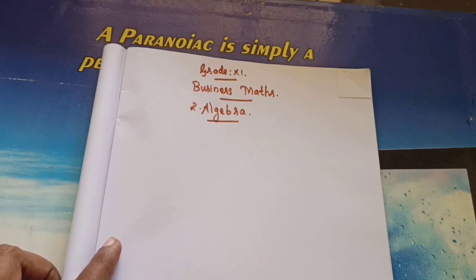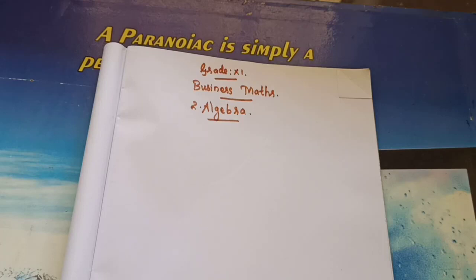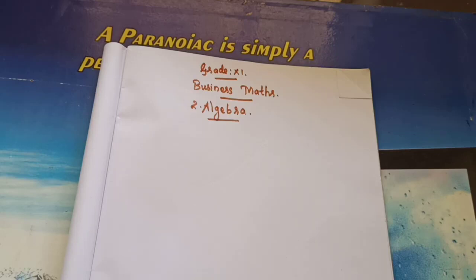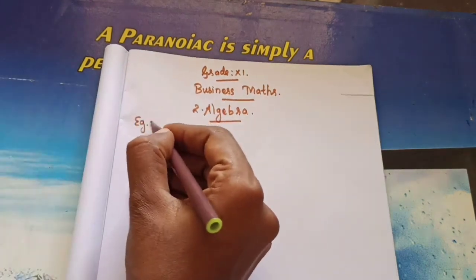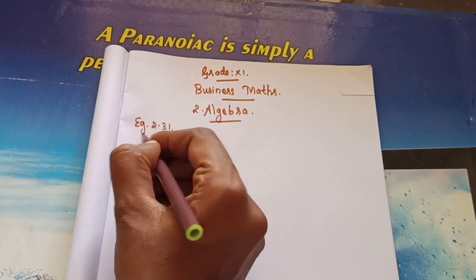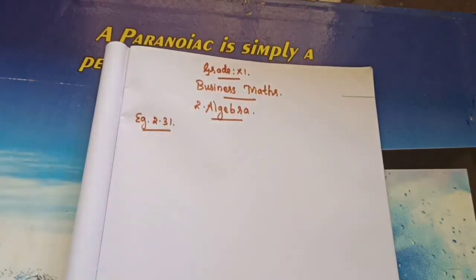Good morning students, welcome to grade 11 business mathematics class. We are learning our second chapter, algebra. In this algebra chapter, you have learned partial fractions, then permutations, combinations, and different categories. Today there are some problems left in combinations. We will complete those. We have already completed up to example 2.30, so we will start from example 2.31 today.